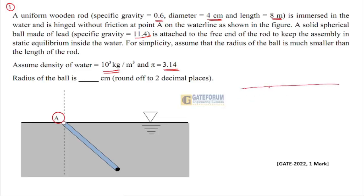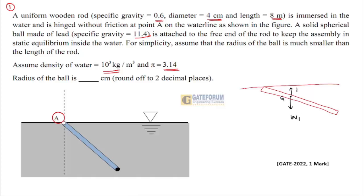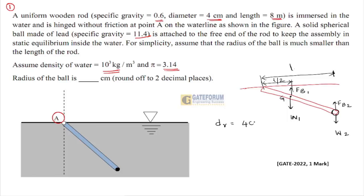For solving this question, I will be drawing a free body diagram. This is the gate which is immersed. Let G be the point where the weight force acts downward and the buoyancy force acts upward. This is the weight of the ball acting downward. The total length of the rod is L, with the center of gravity at L/2. The diameter is 4 centimeters and length is 8 meters as given.